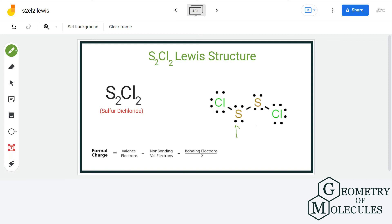For sulfur, we have six valence electrons minus four non-bonding electrons minus four bonding electrons divided by two that gives us a formal charge of zero.